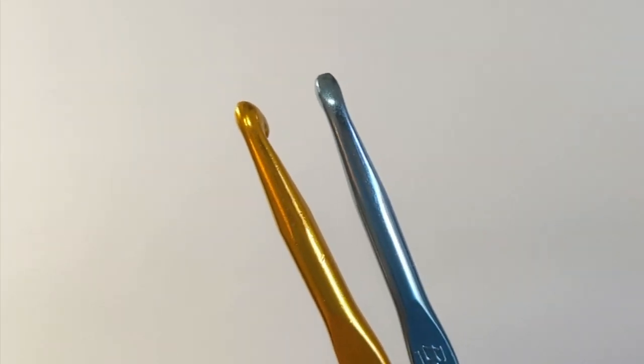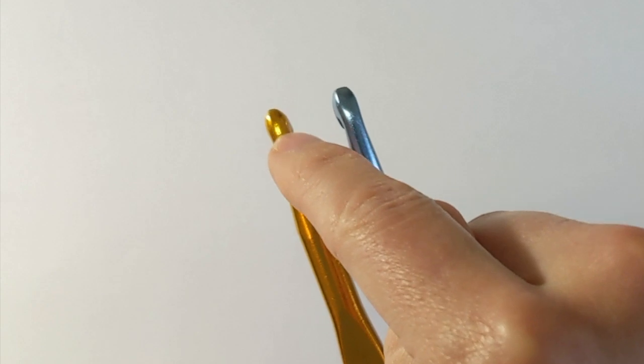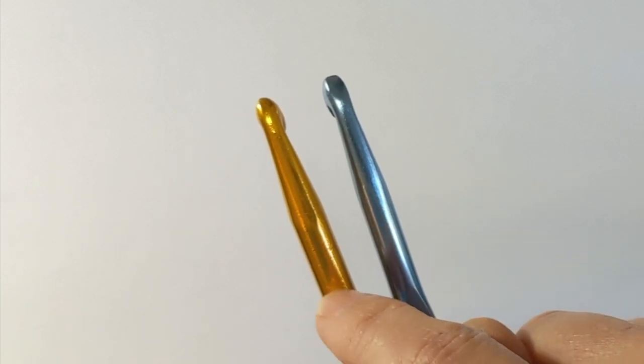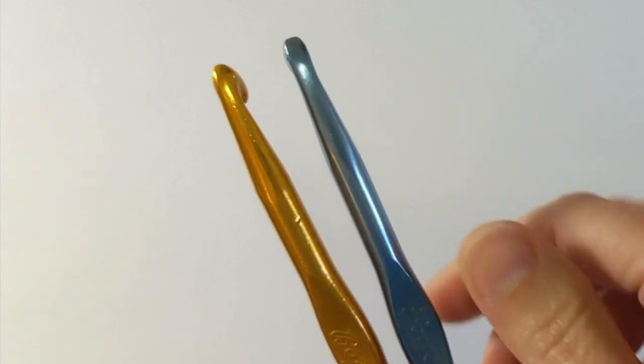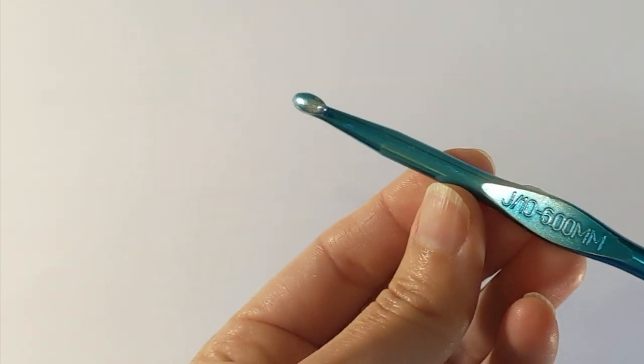You can also see here from the back a smoother, more parabola shape in the vintage hook versus a more blunt and off, flattened off top in the modern hook.